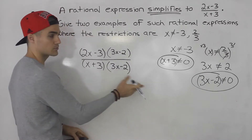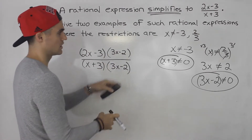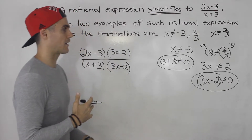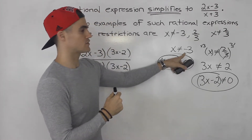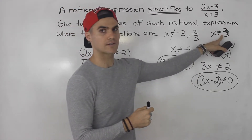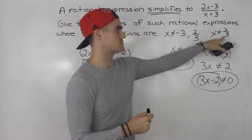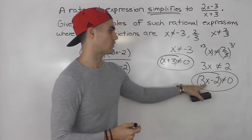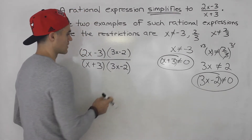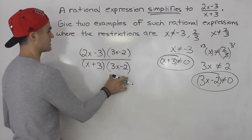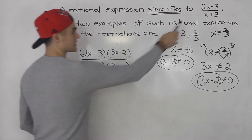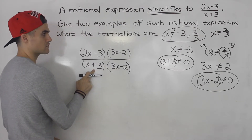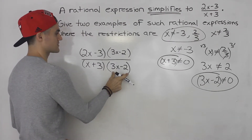So 3x minus 2 is that factor. When you set this not equal to 0 — like if you were given this expression and finding the restrictions — you would end up with x cannot equal 2 over 3. That is our first example of a rational expression that simplifies to 2x minus 3 over x plus 3, where x cannot equal negative 3 for the x plus 3 factor, and x cannot equal 2 over 3 for the 3x minus 2 factor.